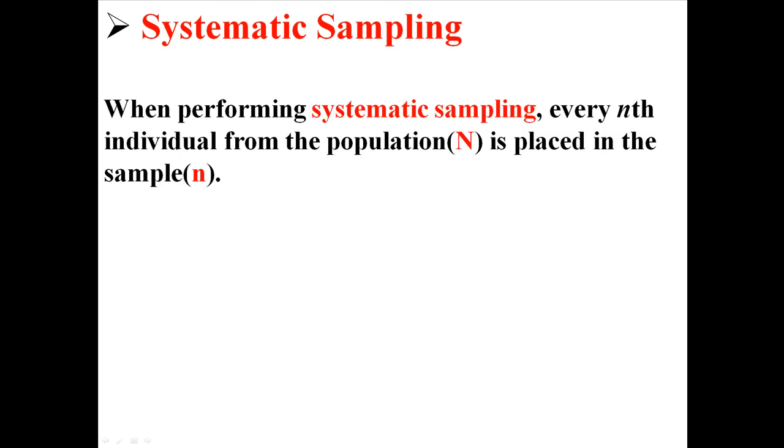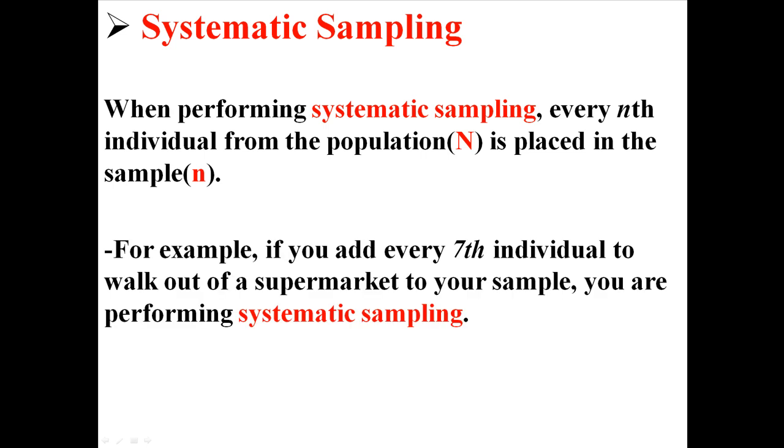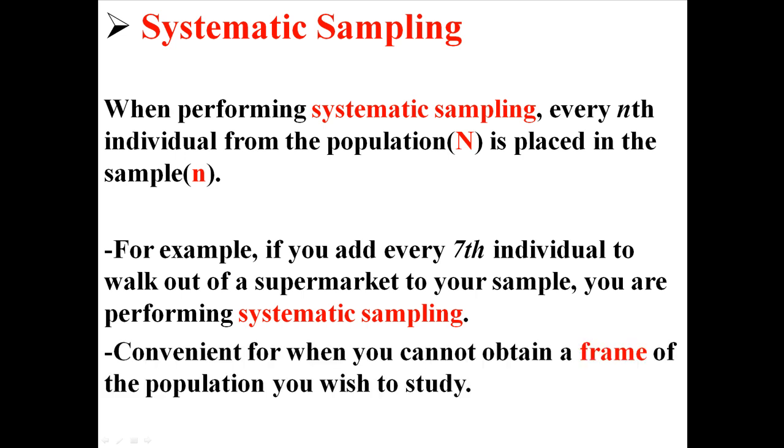There's also systematic sampling. When performing systematic sampling, every nth individual from the population is placed into the sample. For example, if you add every seventh individual to walk out of a supermarket to your sample, you are performing systematic sampling. That way you don't need to know everyone in the population of supermarket shoppers. You can just add every seventh person and that's a lot easier. This is convenient when you cannot obtain a frame, which is a list of everyone in the population.